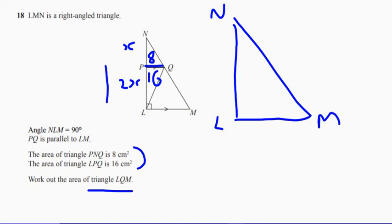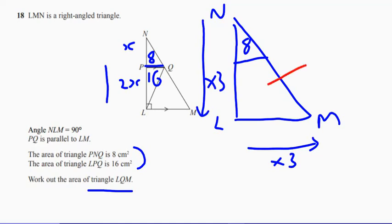Now, we've got similar triangles here. Remember, this one at the top is 8. The area of that one is 8. And to go there, it's multiplied by 3. So to go that way, it's multiplied by 3 in terms of our lengths. So the area of this triangle must be 8 multiplied by 3 multiplied by 3, which is 9. So therefore, the area of this triangle is 72.